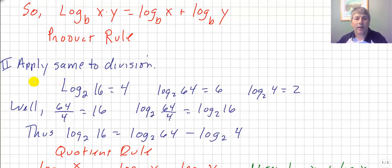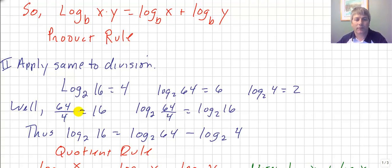We can apply the same concept to division. We know that log base 2 of 64 equals 6. We also know log base 2 of 16 equals 4 and log base 2 of 4 equals 2. Log base 2 of 16 is the same as log base 2 of 64 divided by 4. So we know 64 divided by 4 is 16, and we can rewrite log base 2 of 16 as log base 2 of 64 divided by 4, which equals log base 2 of 16.